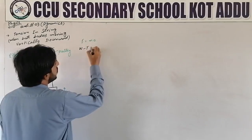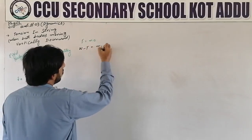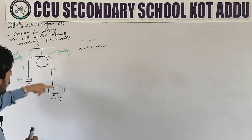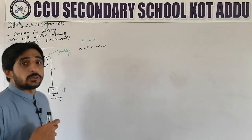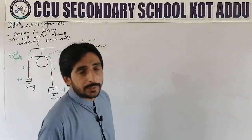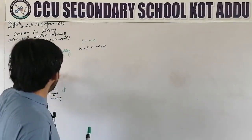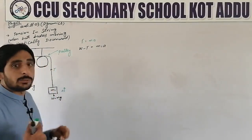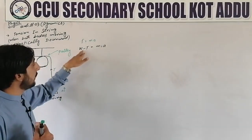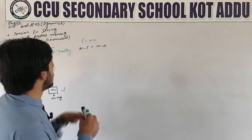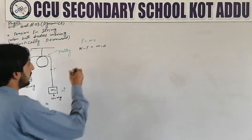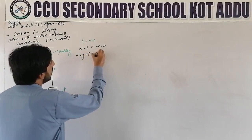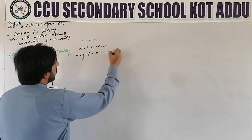Weight minus tension is equal to m1a. Weight acts in the downward direction and tension acts upward, so the net force gives us: m1g minus T is equal to m1a. This is Equation number one.